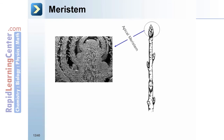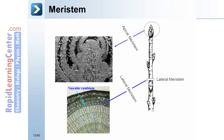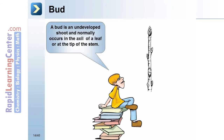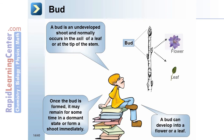This is a cross-section of the apical meristem at the tip of the shoot, and this is a cross-section of the lateral meristem. A bud is an undeveloped shoot that normally occurs in the axil of a leaf or at the tip of the stem. Once formed, a bud may remain dormant for some time or form a shoot immediately, and can develop into a flower or a leaf.